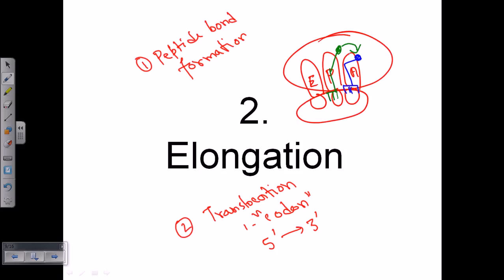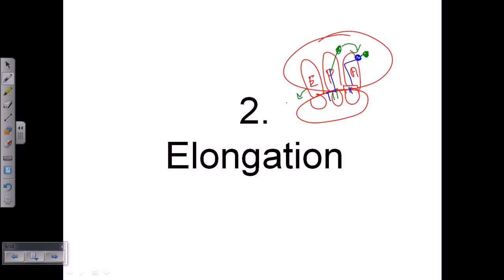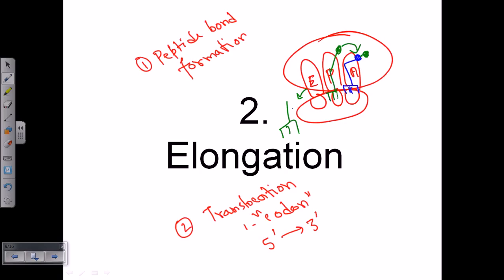A peptide bond forms between these two amino acids. The green-colored amino acid becomes attached to the blue-colored amino acid via a peptide bond. As a result, the tRNA present at the P site becomes uncharged, then moves to the E site and exits. This peptidyl transfer is catalyzed by the large subunit — specifically by the rRNA present in the large subunit.